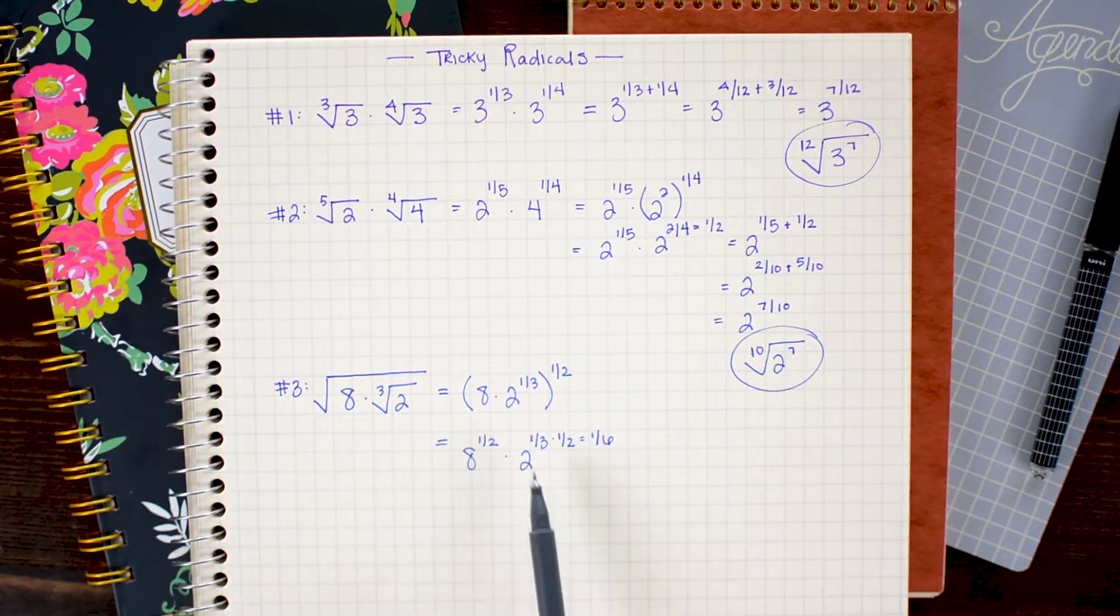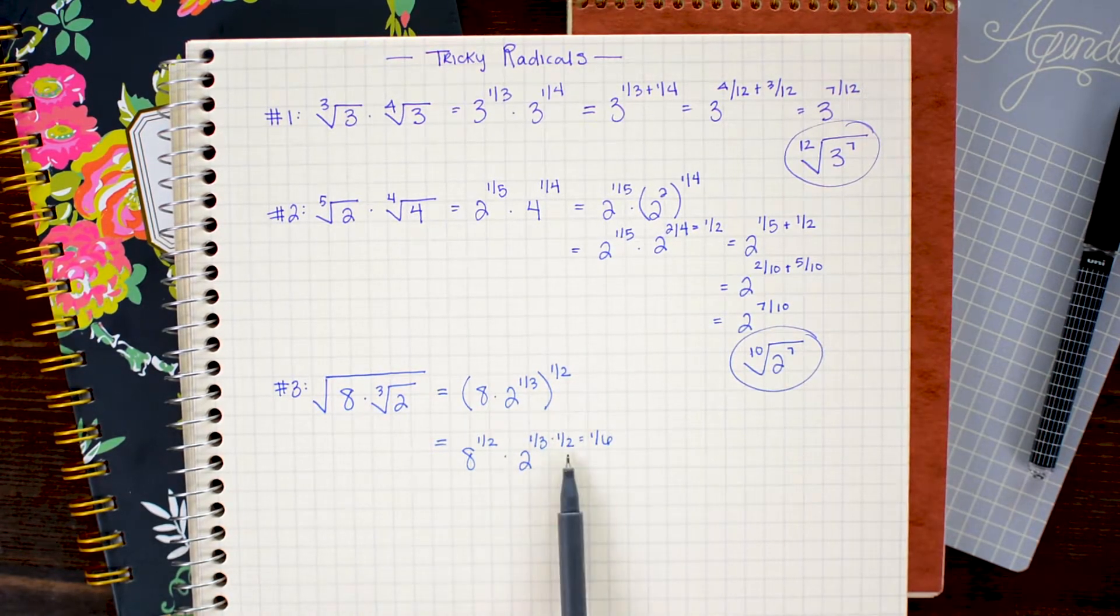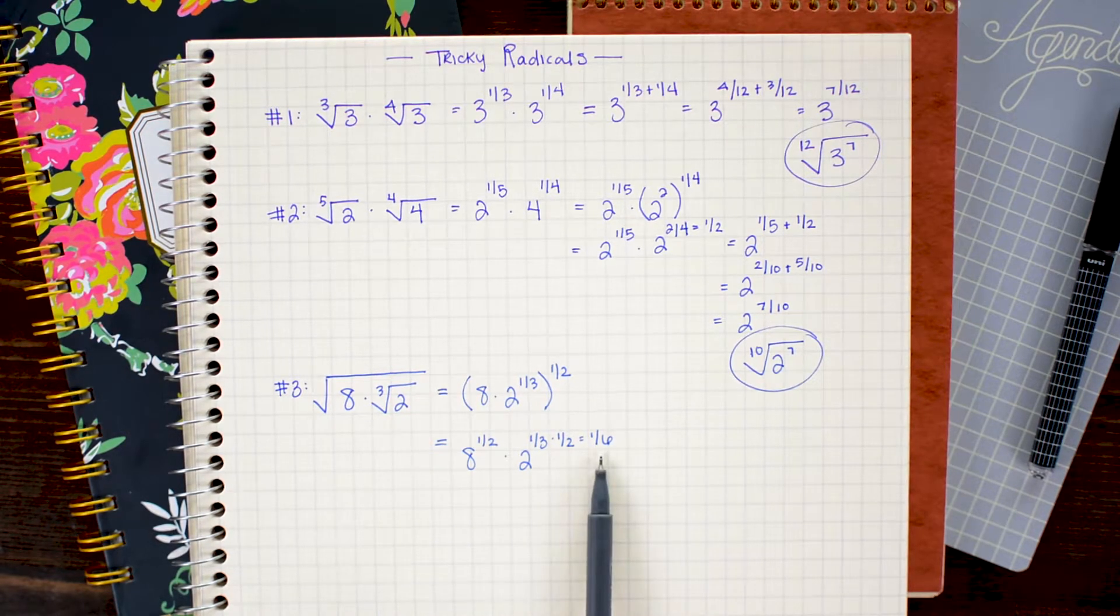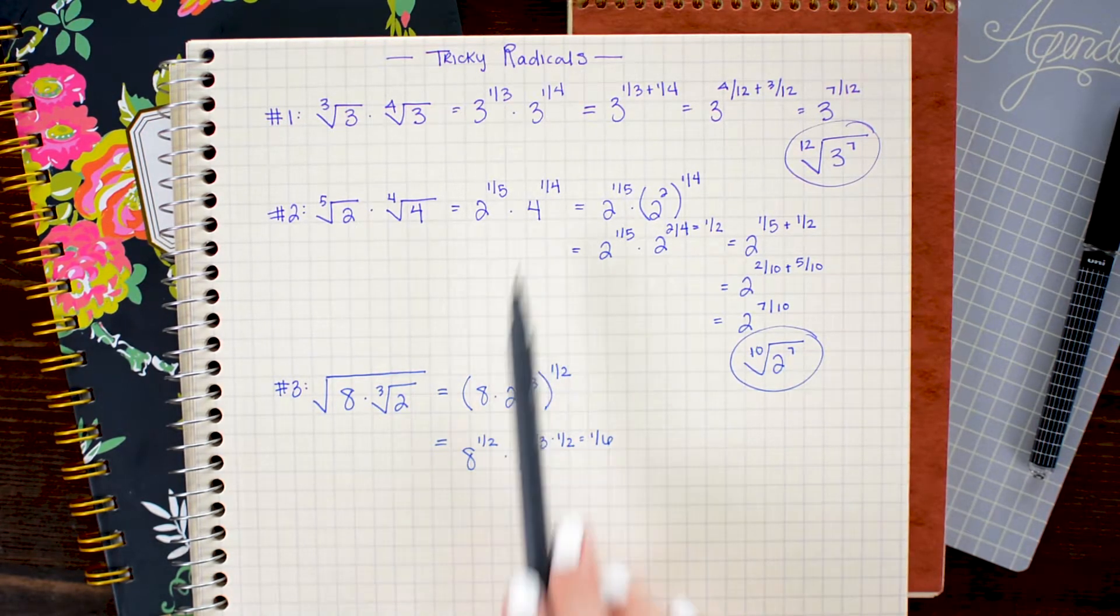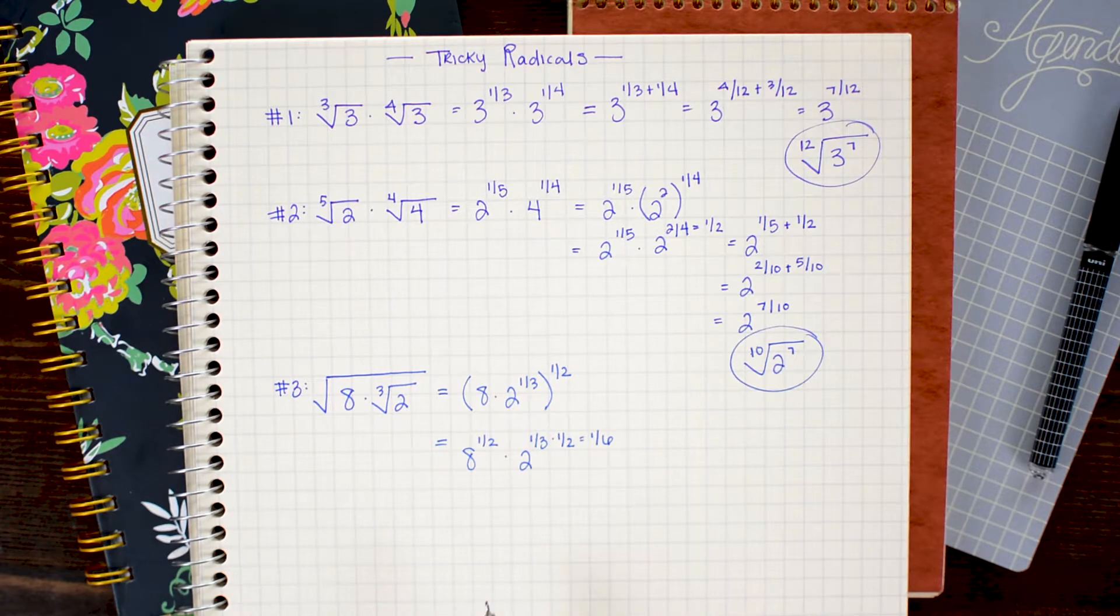Remember that when we raise a power to a power we multiply, so this becomes 2 to the 1/6 power. And again, like in the last problem we can do a little bit of clever math by replacing the 8 with 2 cubed.